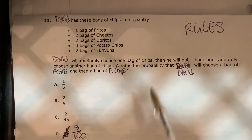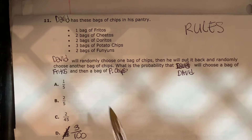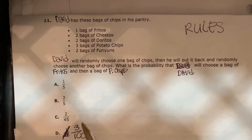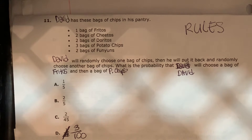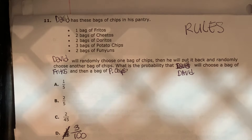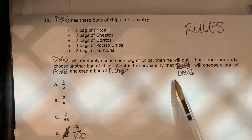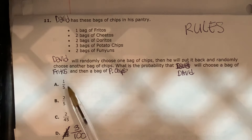David has these bags of chips in his pantry: a bag of Fritos, two bags of Cheetos, two bags of Doritos, three bags of potato chips, and two bags of Funyuns. David will randomly choose one bag of chips, then put it back and randomly choose another bag of chips. What is the probability that David will choose a bag of Fritos and then a bag of potato chips?